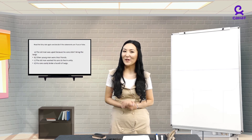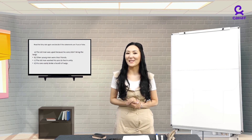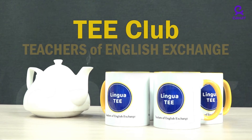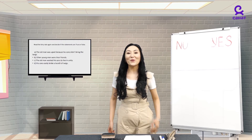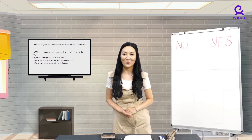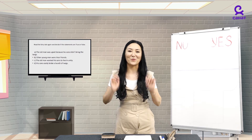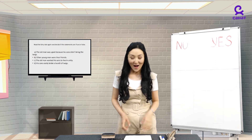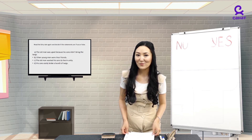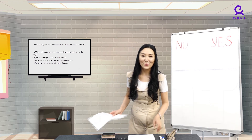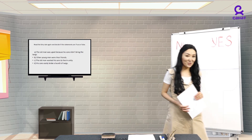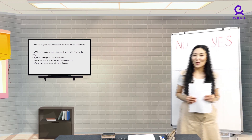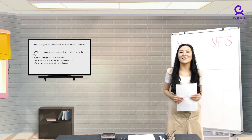Read the fairy tale again and decide if the statements are true or false. Now work with your friend and compare each other's answers. Okay, let's have some exercise now. Stand up everyone. What are we going to do now? I read the statement. You step to the yes corner if the statement is correct and step to the no corner if the statement is incorrect. Ready?